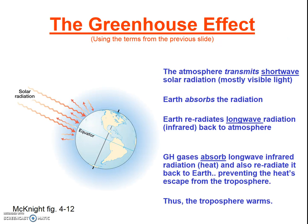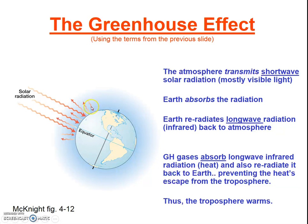So let's put this all together. The atmosphere transmits the shortwave radiation from the Sun — mostly visible light, some infrared and some UV. The Earth absorbs that solar radiation, and then re-radiates longwave radiation back into the atmosphere. Greenhouse gases within the atmosphere absorb longwave radiation; they don't allow it to be transmitted through. They absorb that radiation and then re-radiate it, and some of that re-radiated radiation comes back towards the Earth. This prevents it from escaping the troposphere, and thus the troposphere warms.